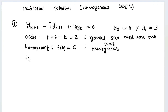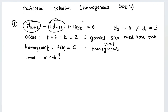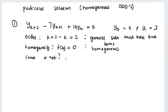Is it linear? Looking at the dependent variables, none of them are multiplied together and none are raised to a power greater than one. Therefore it is linear, because they all have a power of one.